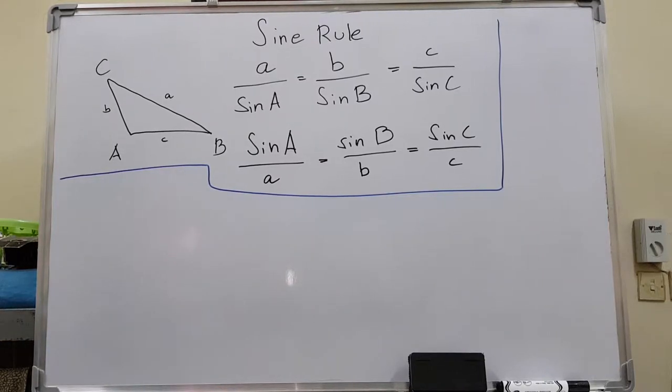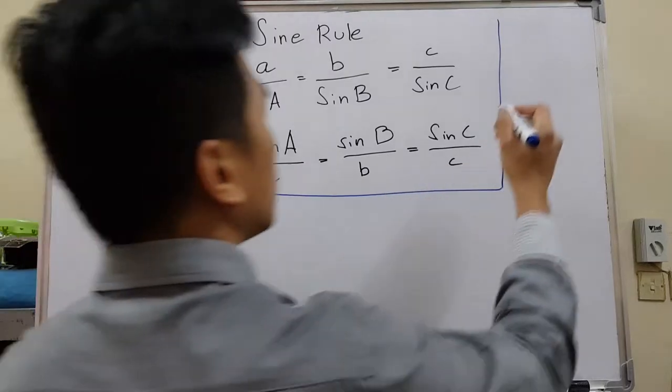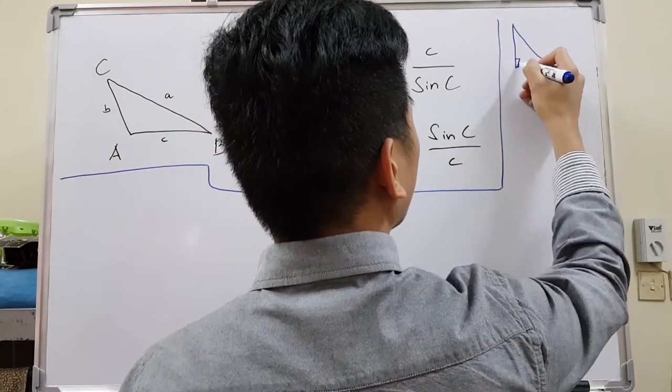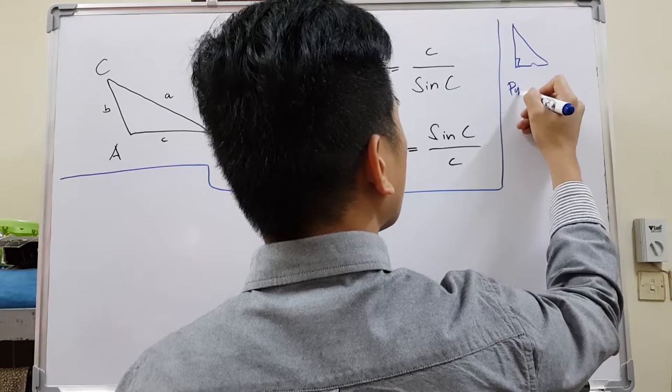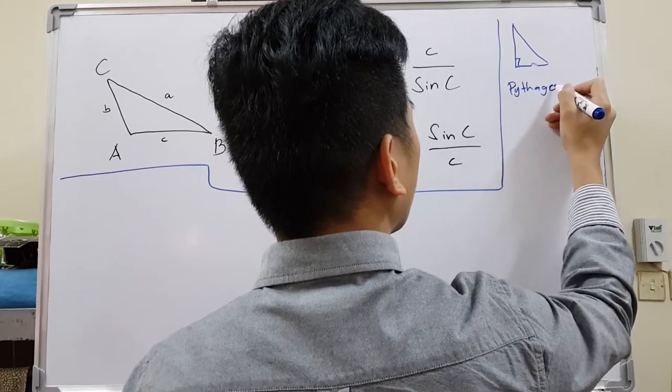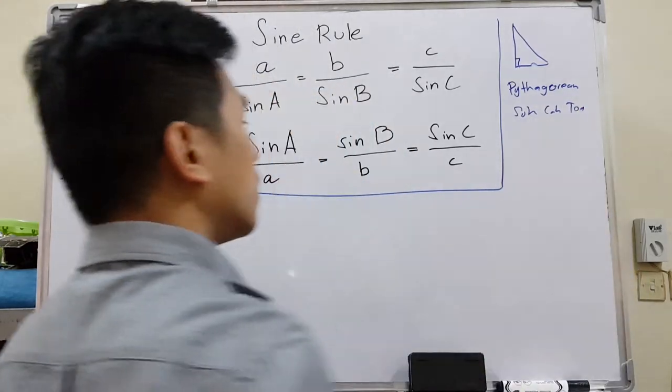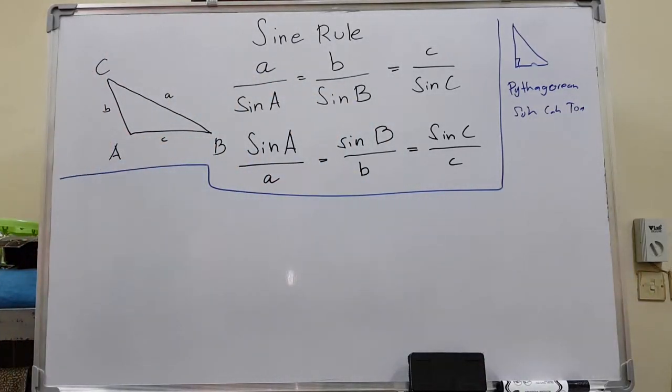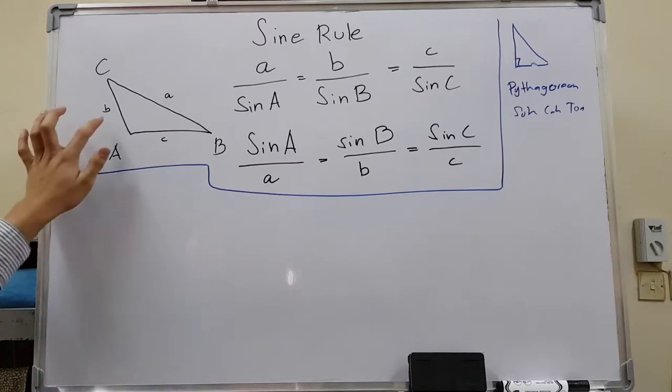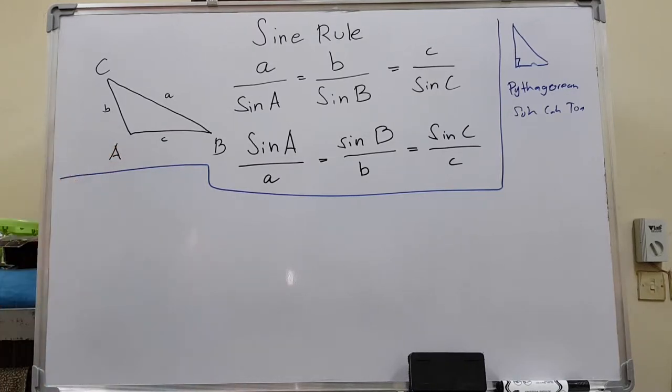Sine rule. So earlier we discussed Pythagorean theorem and SOHCAHTOA. Just remember Pythagorean theorem and SOHCAHTOA can only be used if the triangle is right-angled. Now if you don't have a right triangle, we can use sine rule, but if sine rule is not applicable we will use cosine rule. For now we will start with sine rule.